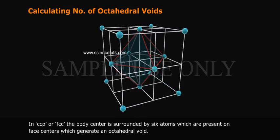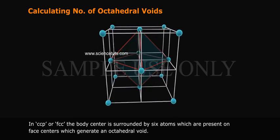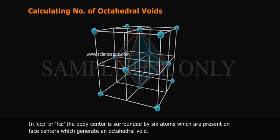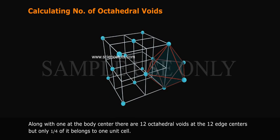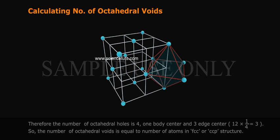Calculating number of octahedral voids. In CCP or FCC, the body center is surrounded by 6 atoms which are present on face centers which generate an octahedral void. Along with 1 at the body center, there are 12 octahedral voids at the 12 edge centers, but only 1 fourth of it belongs to 1 unit cell. Therefore, the number of octahedral holes is 4: 1 body center and 3 edge centers, 12 times 1 by 4 equals 3. So the number of octahedral voids is equal to number of atoms in FCC or CCP structure.